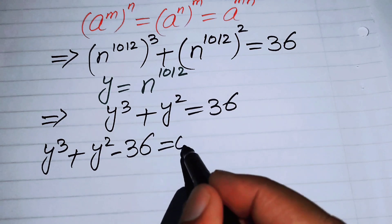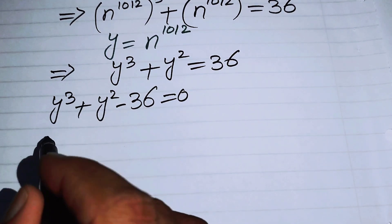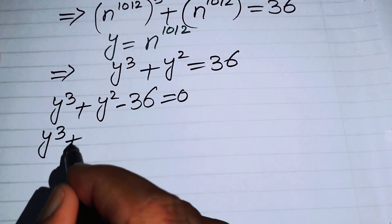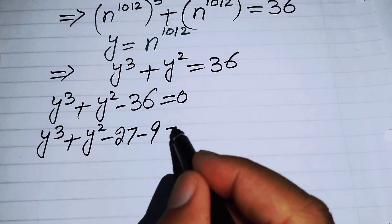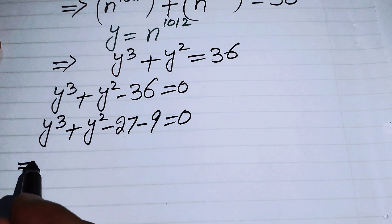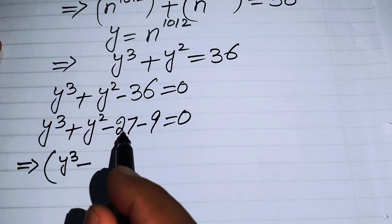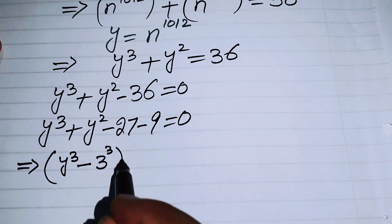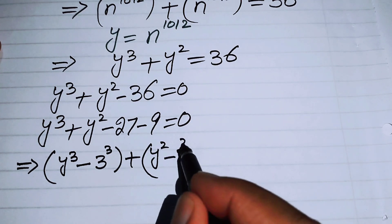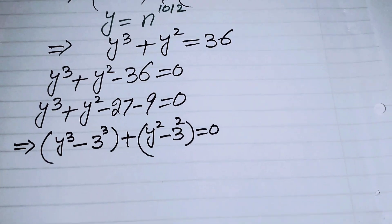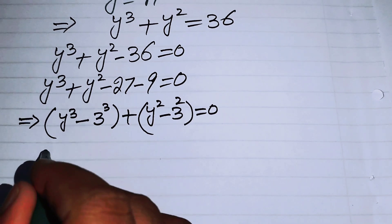Moving 36 to the left-hand side gives y³ + y² - 36 = 0. We now try to solve this cubic equation by factoring. We rewrite it as y³ + y² - 27 - 9 = 0, then rearrange by pairing the cubic and square terms: (y³ - 27) + (y² - 9) = 0, where 27 = 3³ and 9 = 3².